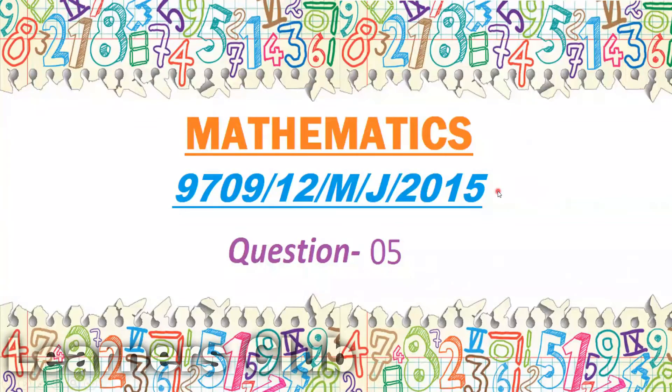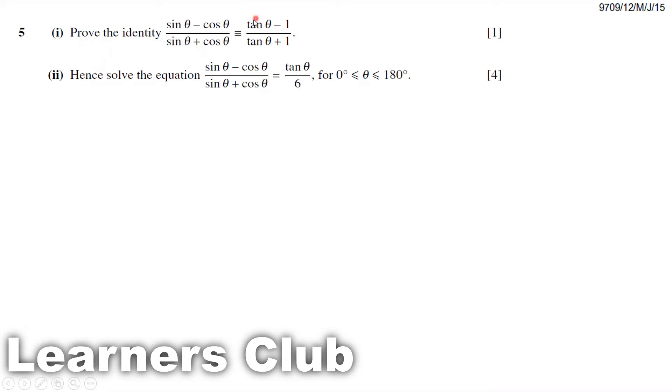Mathematics May 2015 question 5. The first part of the question says prove the identity: sin θ minus cos θ over sin θ plus cos θ is equivalent to tan θ minus 1 over tan θ plus 1.